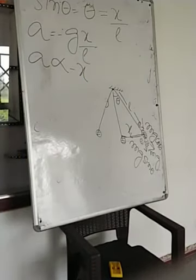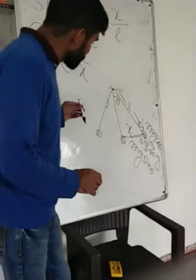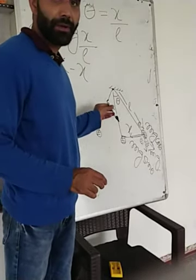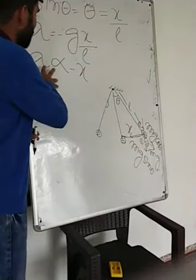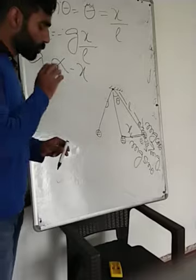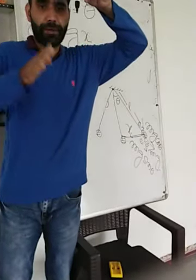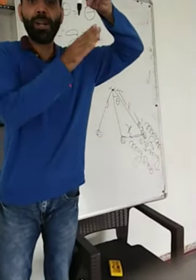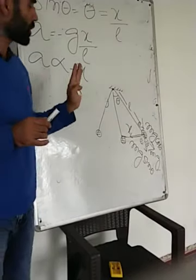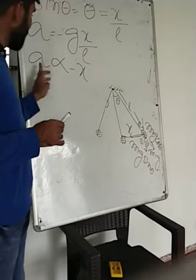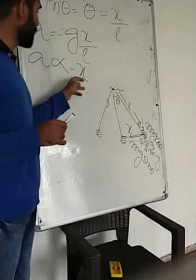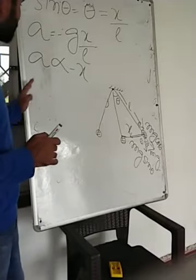Therefore, acceleration is directly proportional to displacement x but with a negative sign. This means the motion that the simple pendulum shows is simply simple harmonic motion. We have proved that the condition is met: acceleration is directly proportional to displacement with a negative sign.